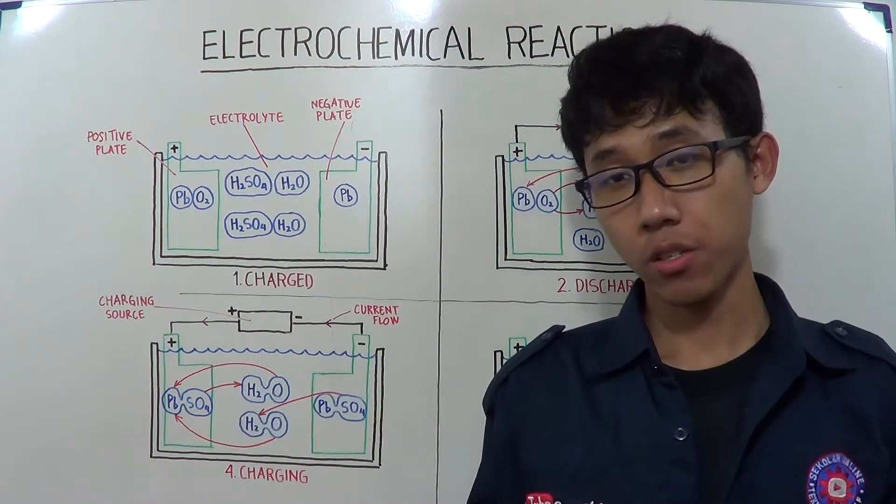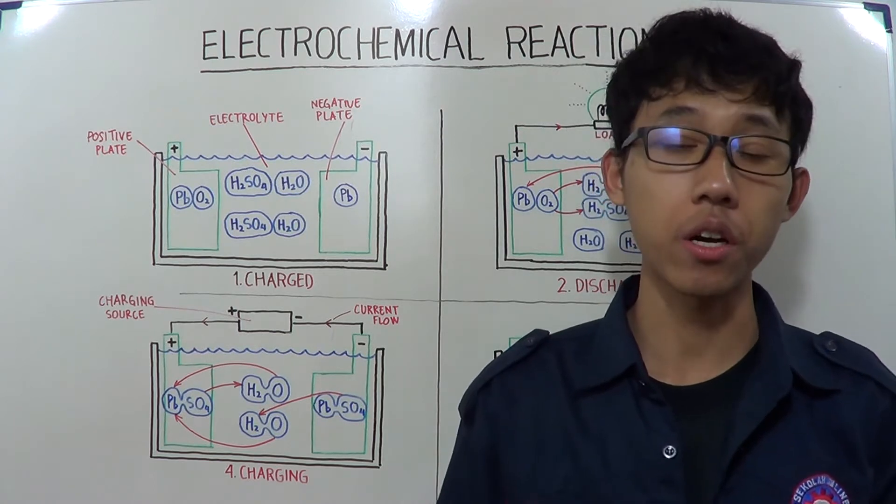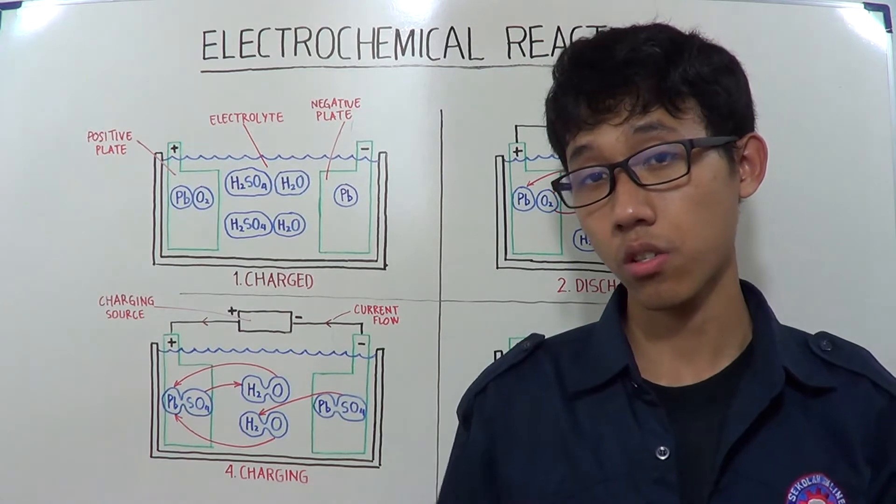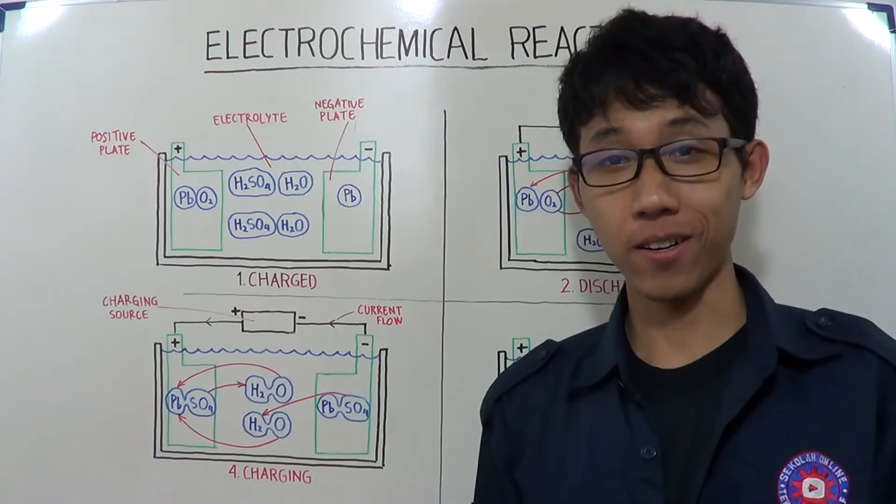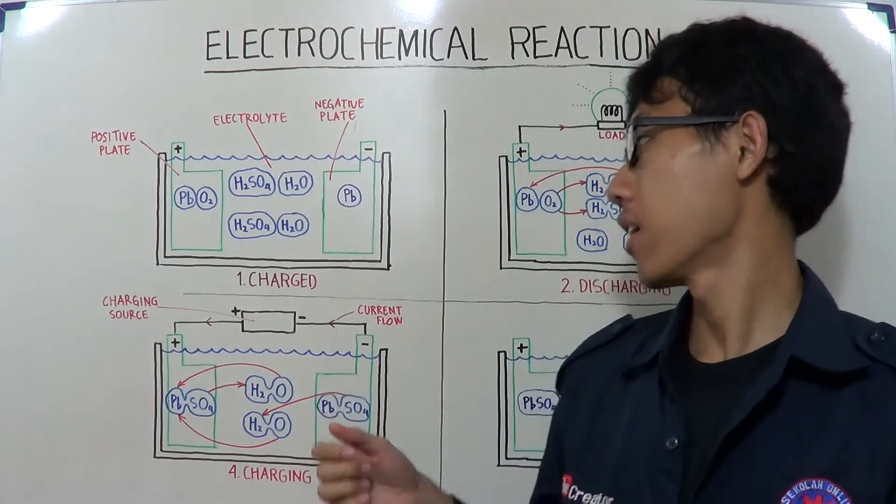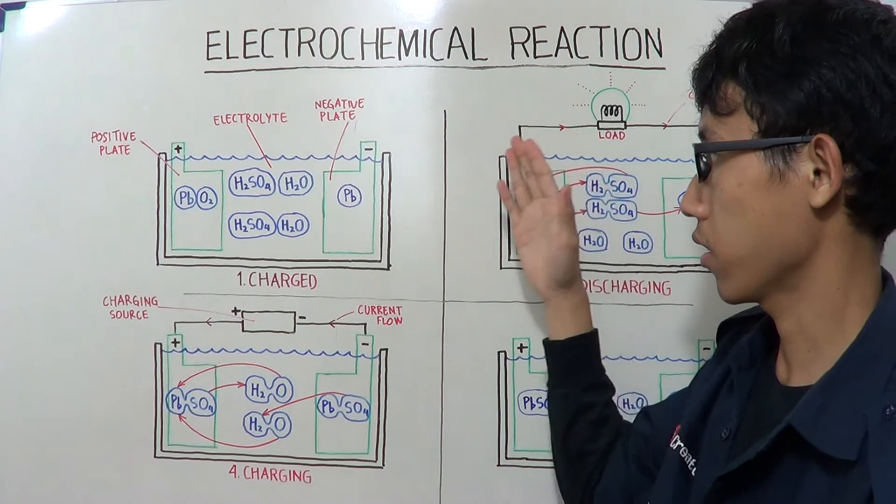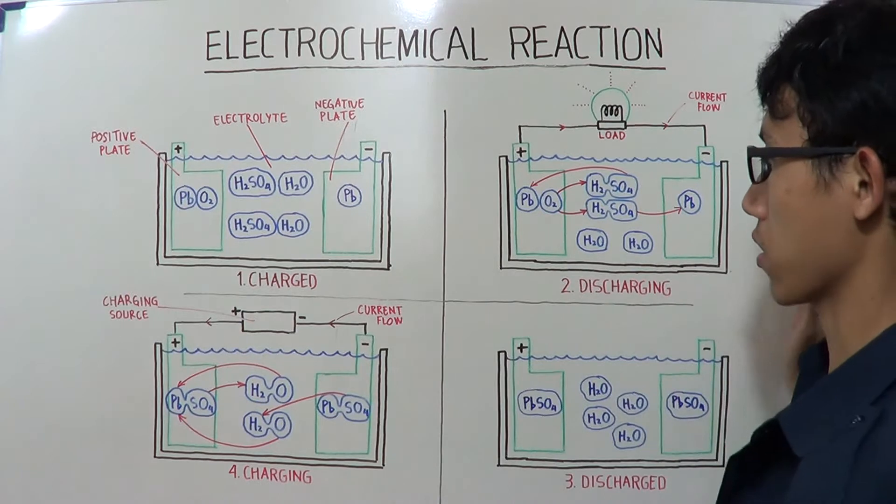A lead acid storage battery can be partially discharged and recharged many times. There are 4 stages in this discharging and recharging cycle. Now, as you can see on the whiteboard, I've drawn a simple illustration of the battery and the electrochemical reaction process.